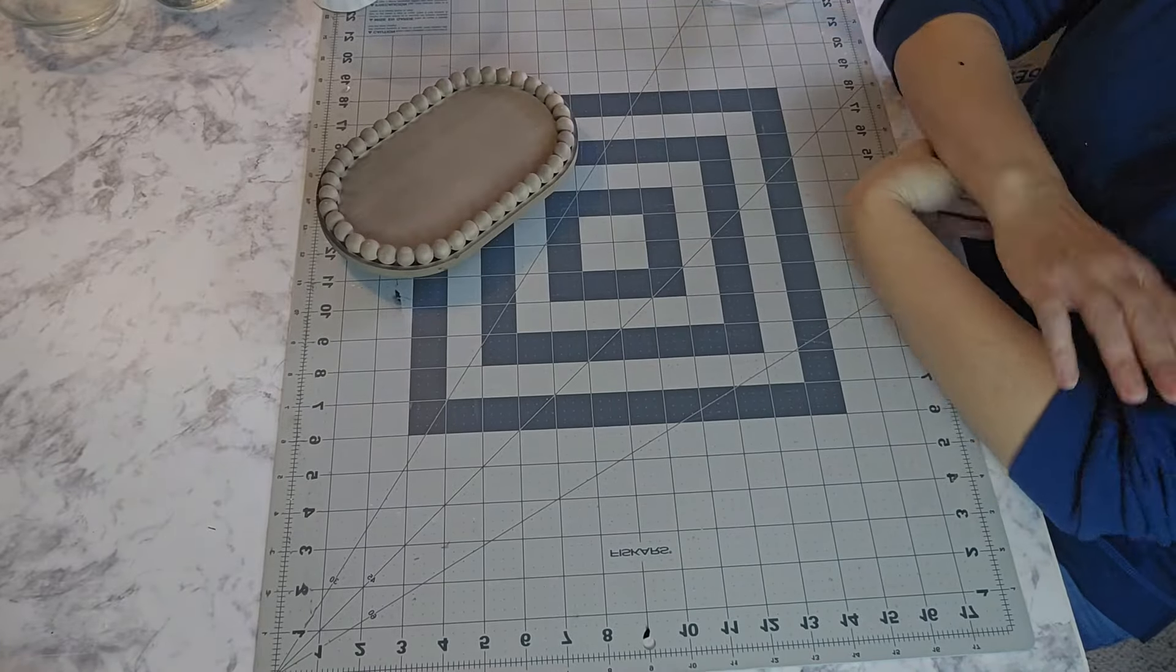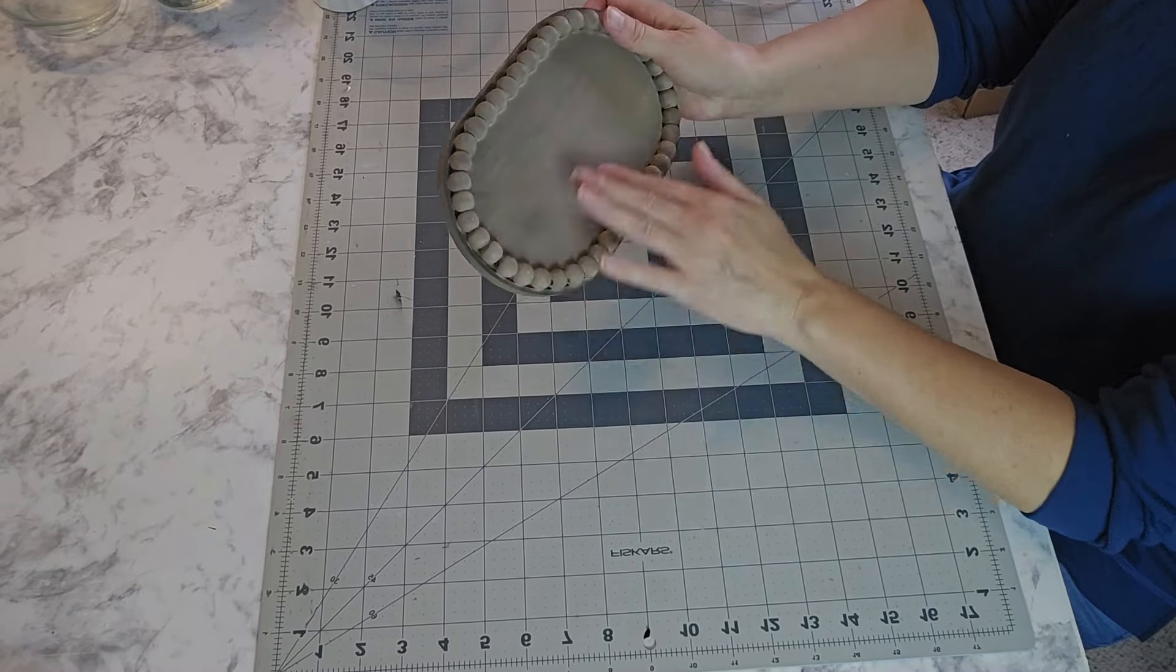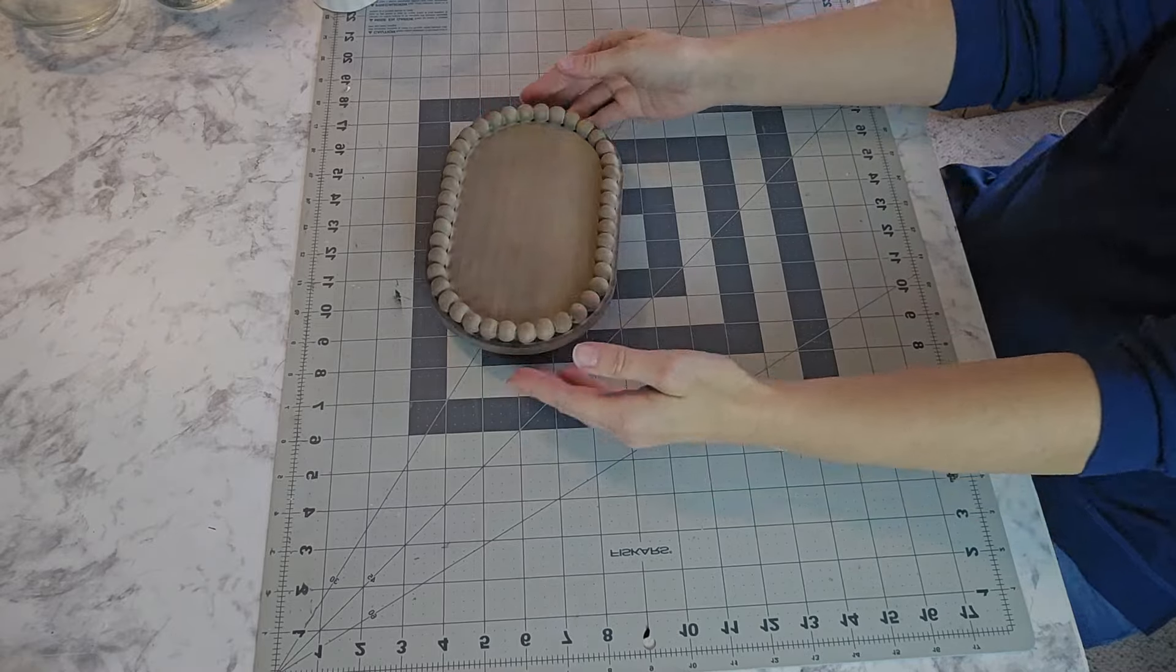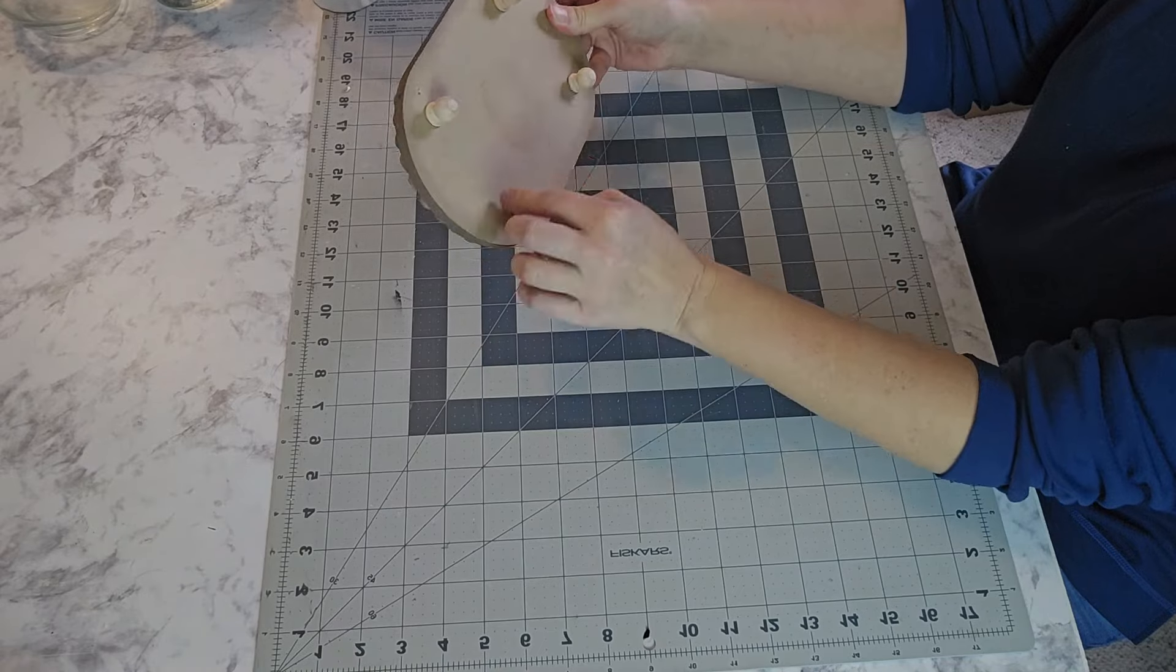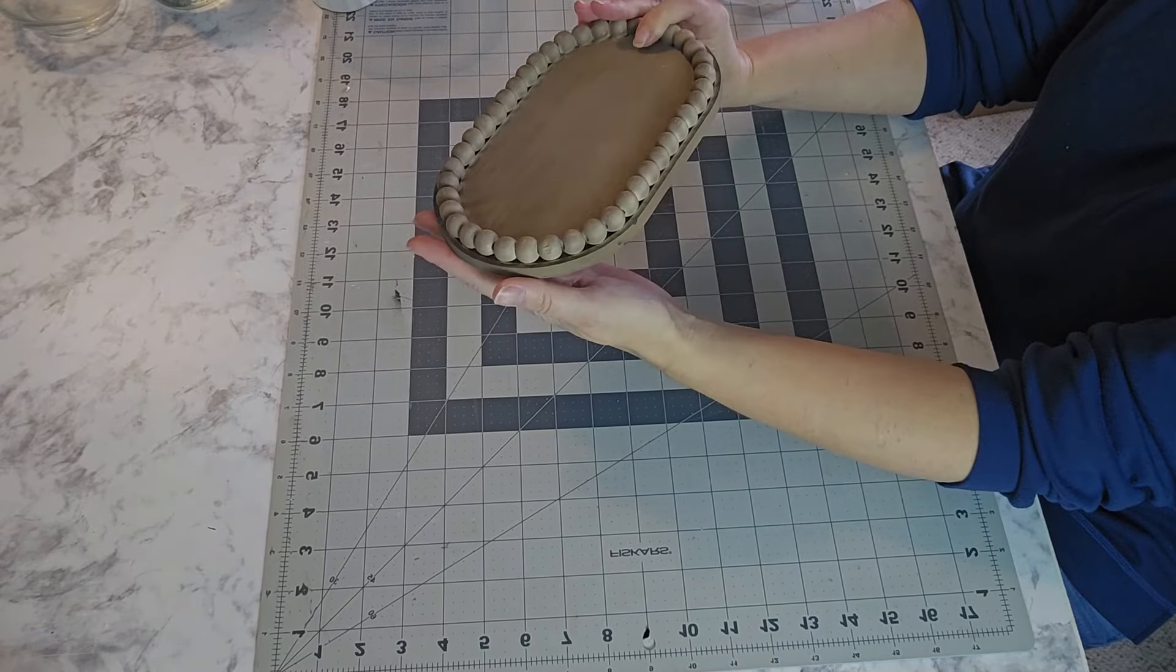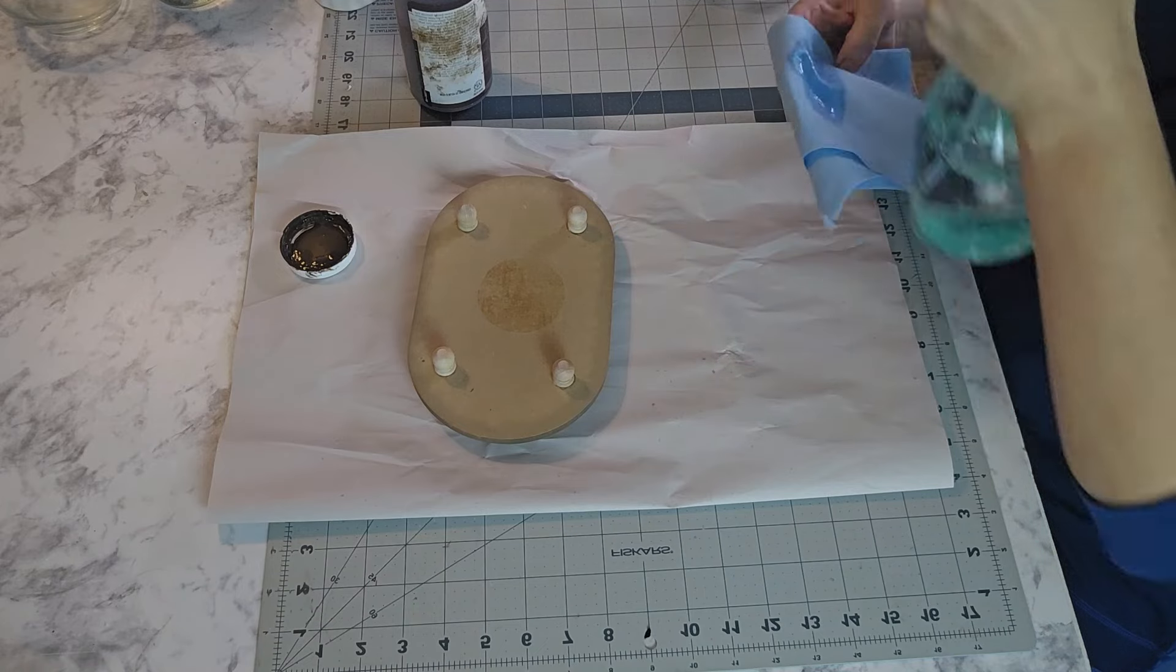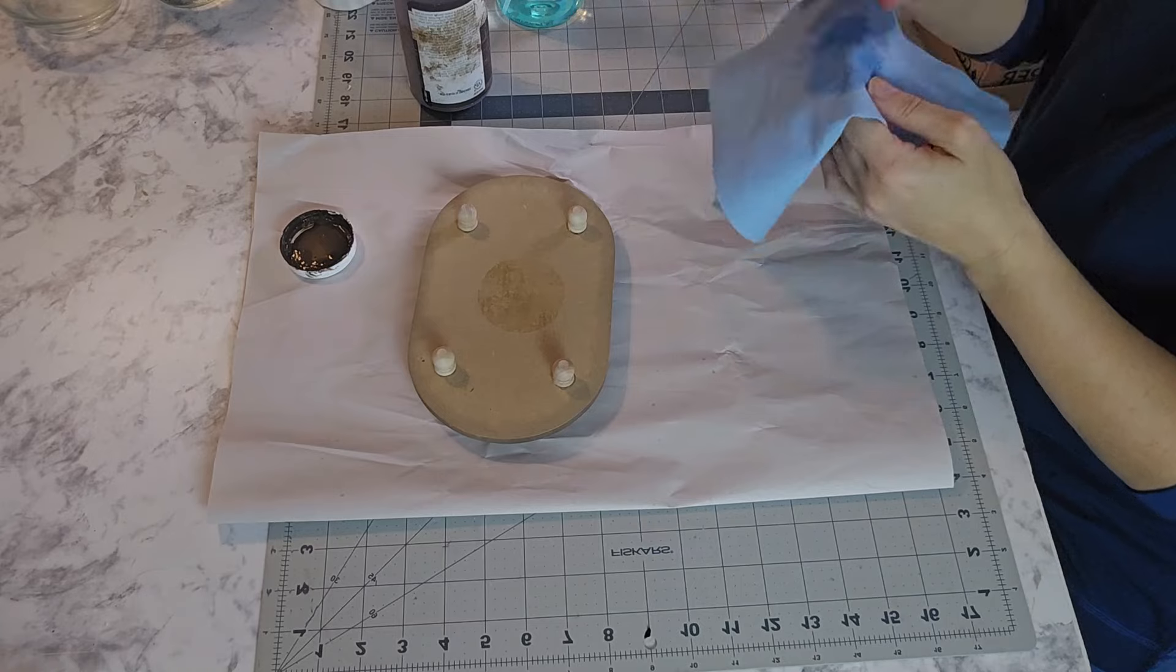And voila, we have a riser. Now if you want to paint it a different color, of course you can paint it. You can make it look any way you want. I think I'm going to take maybe a little bit of antique wax and just go over these, just to kind of make them a little bit browner. I'm just going to spritz my towel down with a little bit of water because I'm going to use this shop towel.